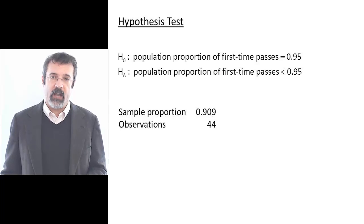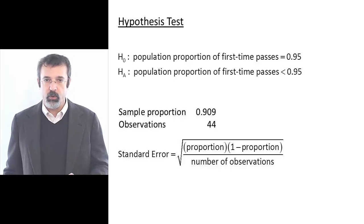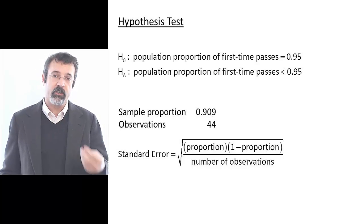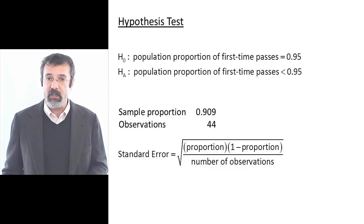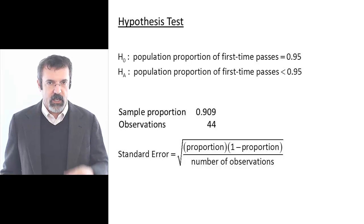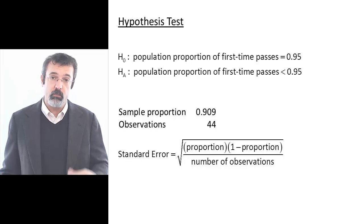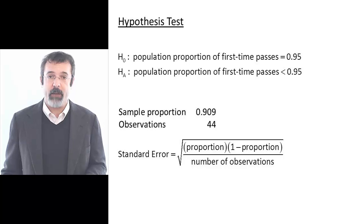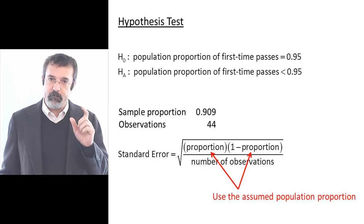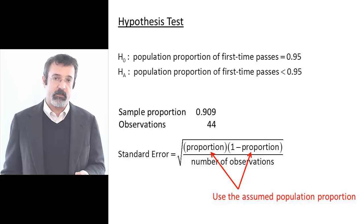We now need to calculate the standard error of our proportion. The standard error of a proportion is the square root of the proportion times 1 minus the proportion, divided by the number of observations. Now while we observe a proportion of 90.9%, this is a hypothesis test, and we begin by assuming that something is true — that the proportion of students who passed the first time is 95%. So we plug this 95% into the standard error formula. The standard error of our proportion is 0.033.